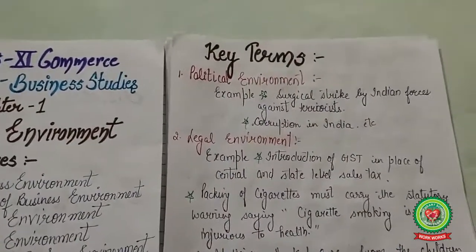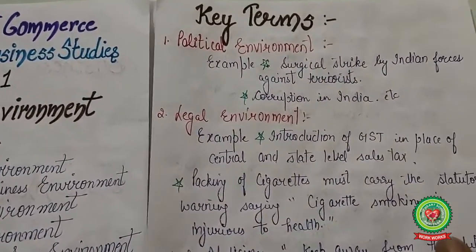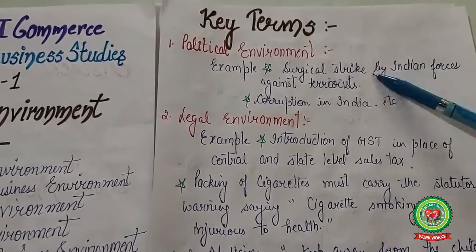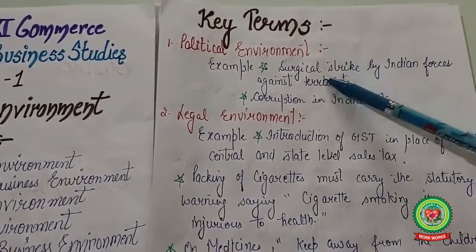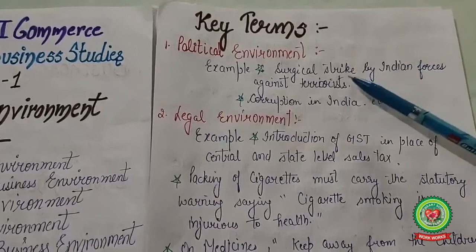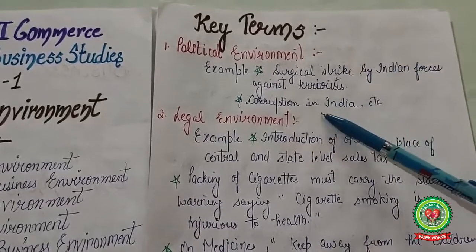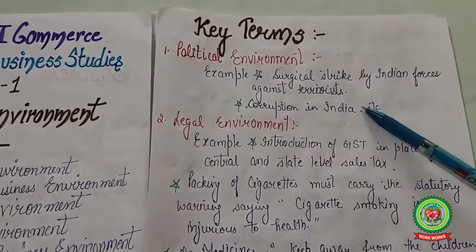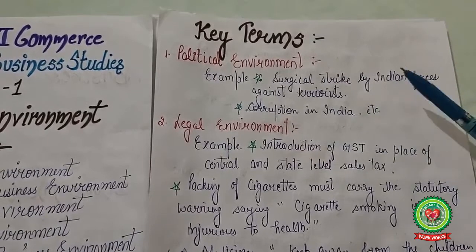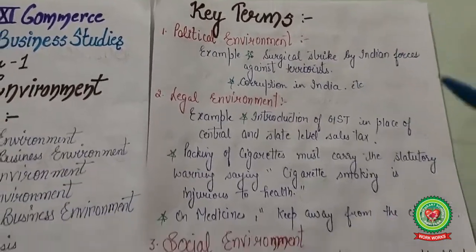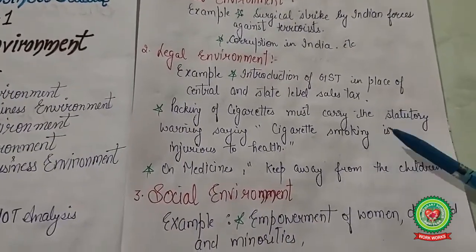The first key term is political environment. The political environment affects the business enterprise — for example, surgical strikes by Indian forces against terrorists, and corruption in India, which affects the progress of business enterprises. Next is the legal environment.